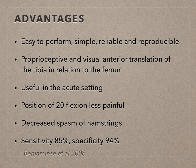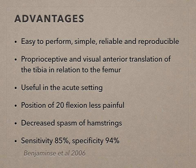The ACL is more maximally stressed and can be assessed more accurately in this position because other tissues do not limit anterior translation of the tibia. In this position, there is decreased spasm of the hamstrings, and the sensitivity of the test is 85% and the specificity is 94%.